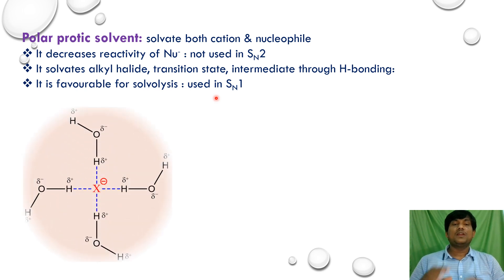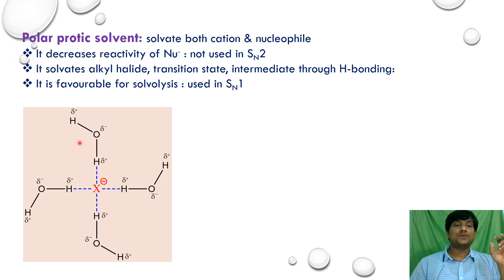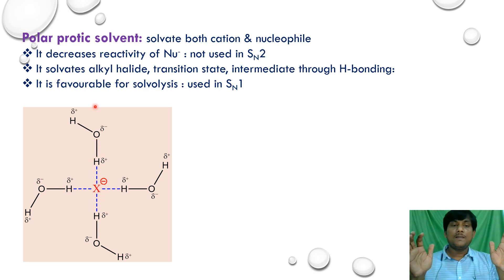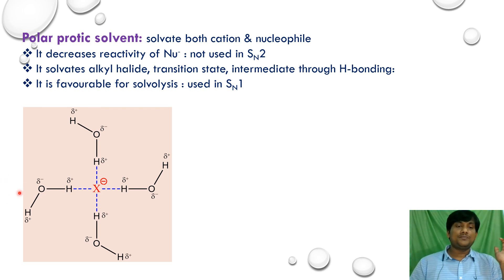When a nucleophile is surrounded by polar protic solvent molecules such as water, the interaction is hydrogen bonding between the nucleophile and solvent. The nucleophile X− is not free — it is caged by solvent molecules — so its attacking nature is diminished in the presence of polar protic solvents, making them not suitable for SN2 reactions.